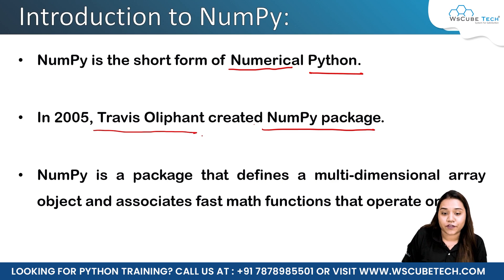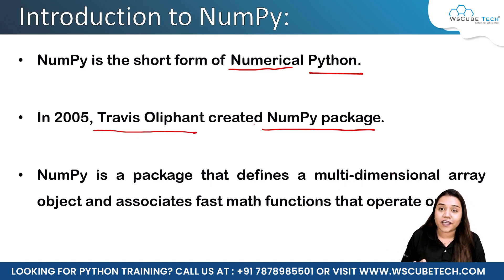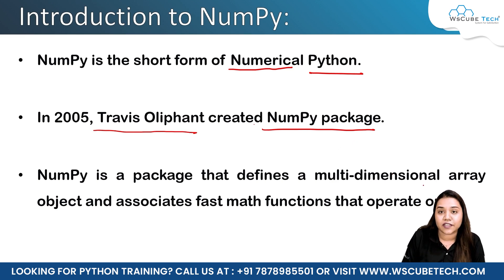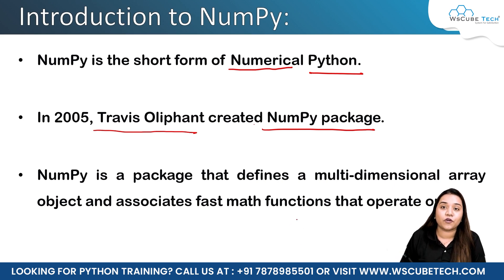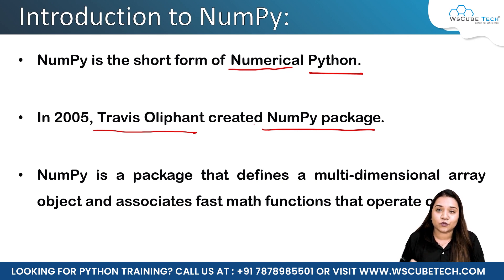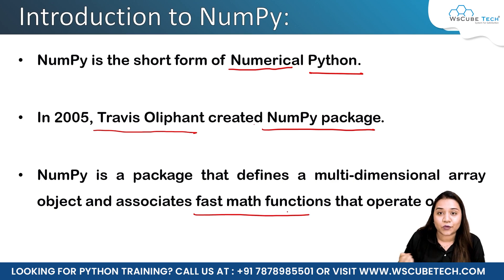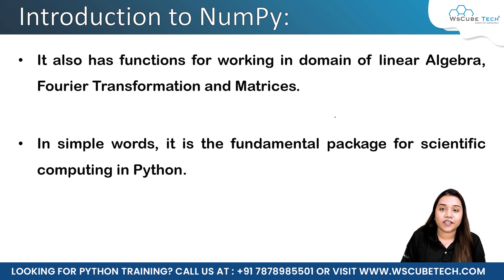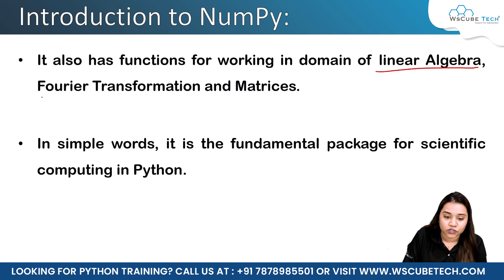NumPy was created in 2005 by Travis Oliphant. It is a package that defines multi-dimensional arrays. Multi-dimensional arrays involve rows and columns — the dimension could be 2D, 3D, or N-dimensional. Arrays can be created using NumPy and are majorly used to calculate mathematical functions quickly.